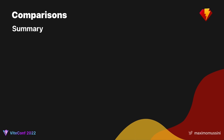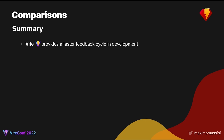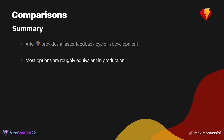In summary, none of these options can match the fast feedback cycle that Vite enables in development. With the exception of import maps, all other options are roughly equivalent in production, creating an optimized bundle. ViteRuby requires less configuration than Webpack and JS Bundling Rails, making it more friendly for beginners and developers that don't like configuring frontend tools. I'd also like to add that Vite benefits from a larger ecosystem, so there's usually more documentation and plugins available.